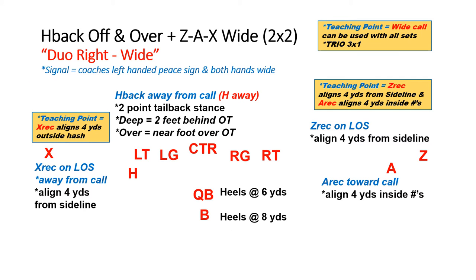The first one here is our dual right with our base wide call. The way you'll signal this is your normal dual right is the left-handed peace sign — because we do opposite, so it's as the players see it. Then you'll simply take both hands and put them out wide from the body. That's your wide signal. That tells the X and the Z, who normally line up on the numbers, they're going to line up four yards from the sideline. The A will also go from the hash mark to four yards inside the numbers. So we get a great stretch with our wide outs — nothing will change with the play call or the play techniques.